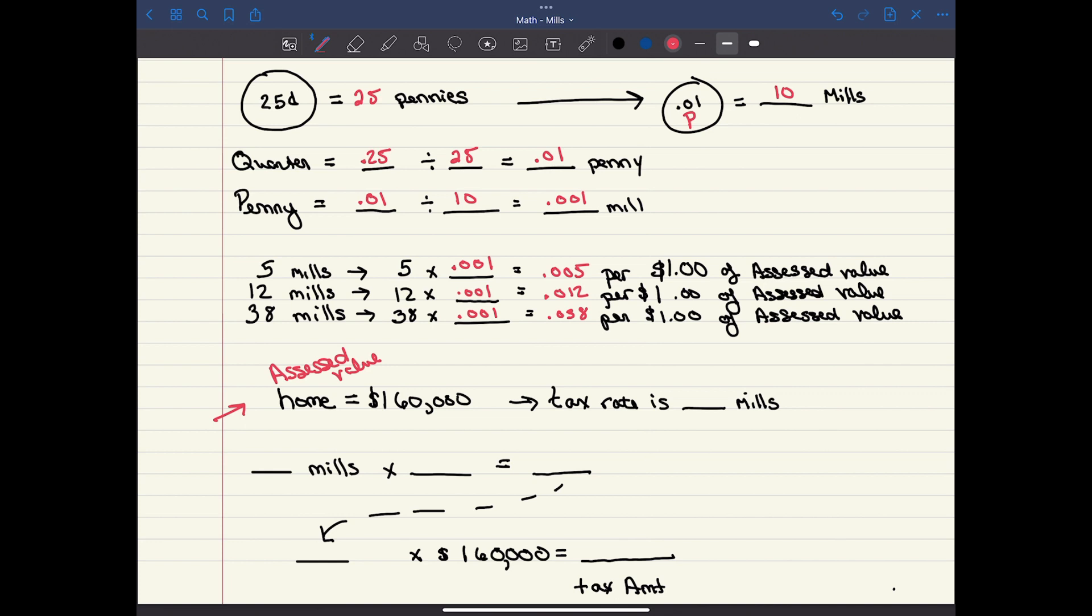So if the assessed value is $160,000, and they tell you the tax rate is 8 mills, we can do this math. We know that 8 mills needs to be multiplied by 0.001, giving us a mill rate of having to pay 0.008 for every $1 in the assessed value.